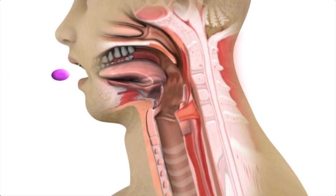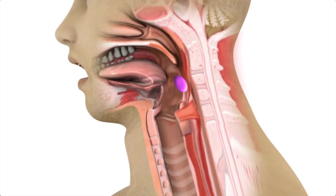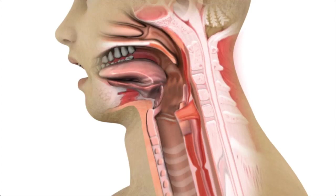With a normal swallow, food, pills, and liquids are able to smoothly move from the mouth through the esophagus and down into the stomach without any difficulty. However, a blockage of some type can develop in the esophagus, leading to food and pills getting stuck, causing choking, gagging, and even regurgitation. This blockage can be due to a web, stricture, or stenosis of some type.